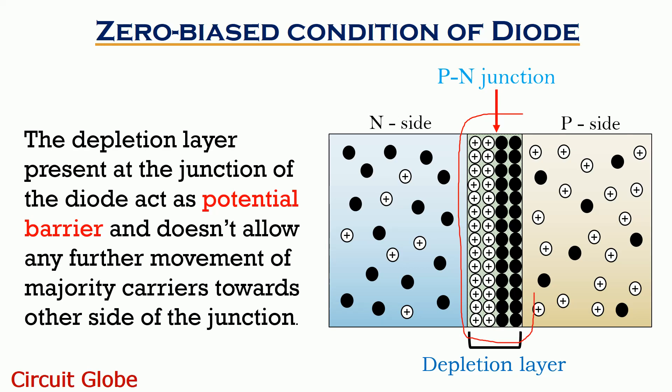Accumulation of charge carriers across the depletion region creates a potential barrier. This barrier potential does not allow any further movement of the carriers towards the other side of the junction.